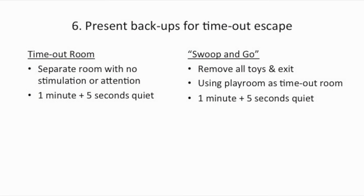The sixth step is teaching parents what to do when the timeout chair procedure doesn't work. Backups are the timeout room or the swoop-and-go technique. The timeout room is a separate room with no stimulation — no electrical outlets, pictures, toys, or attention for the child. When taken to the timeout room, the child stays for 1 minute plus 5 seconds of quiet.